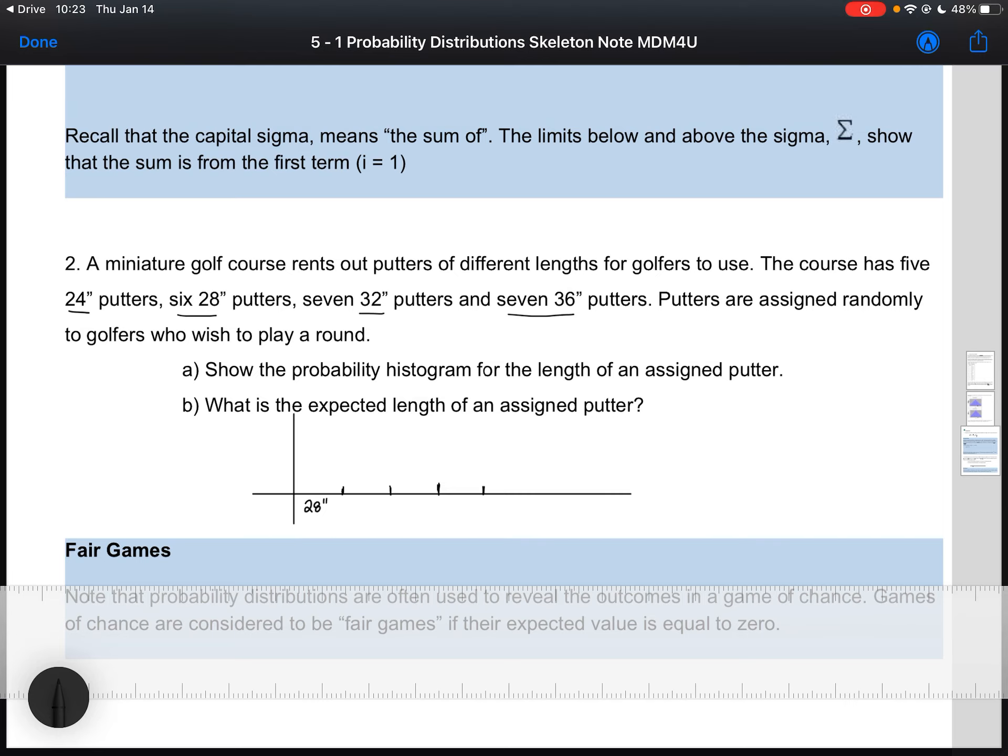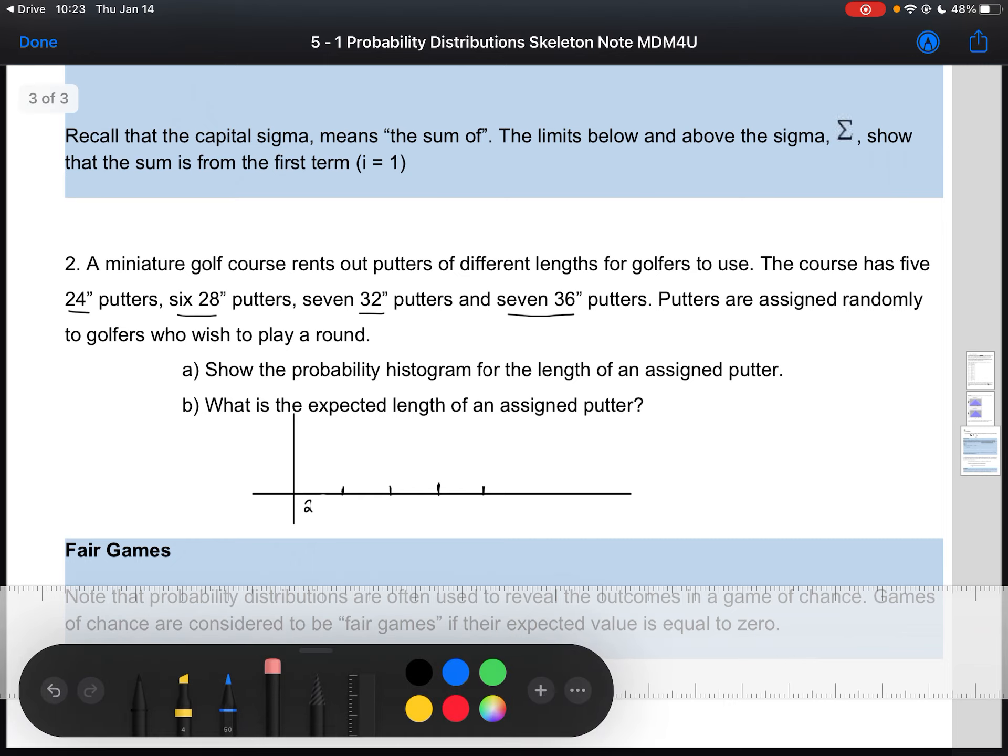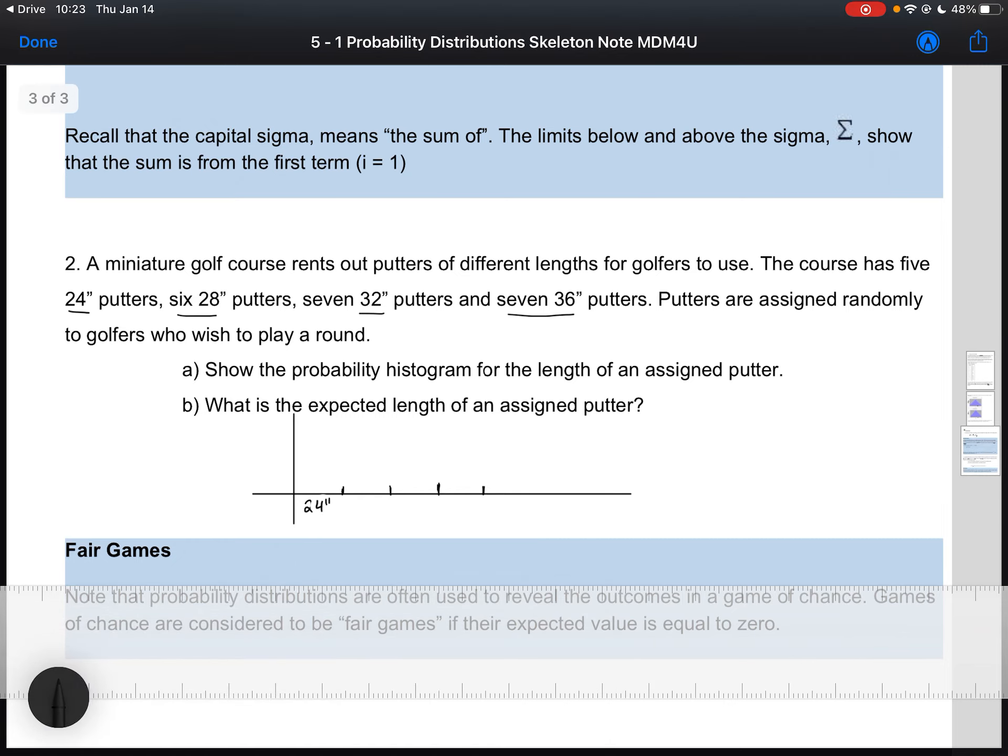So I've got 24, 28, 32, and 36. Now what I need to know is the probability of each of those bars in order to fill in my y-axis and determine the height of each of my bars. So my total number of putters is 5 plus 6 plus 7 plus 7. So 14, 20. I've got 25 total putters.